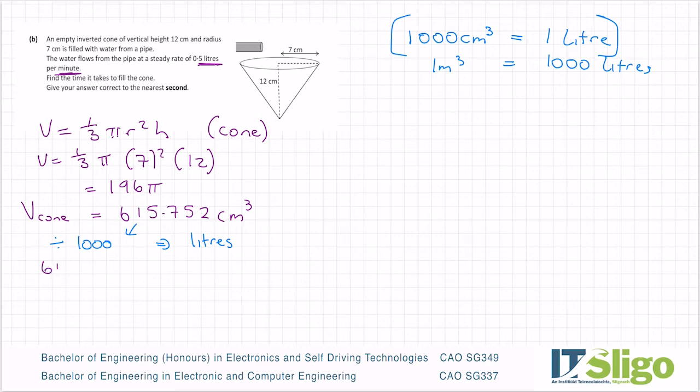That's what we're going to do. We're going to take 615.752 and divide by 1000. Once you know this conversion factor—1000 cm³—you can see that you don't have a full liter here, so you should get a part of a liter. Divide that by 1000 and you'll get 0.615752 liters. So that's how much water is in that cone.